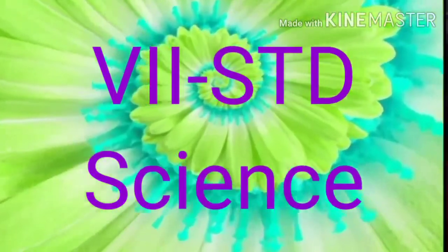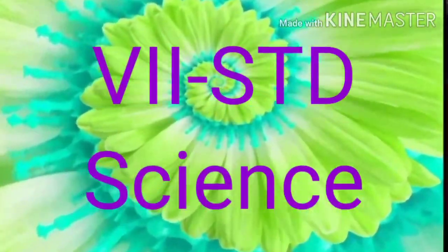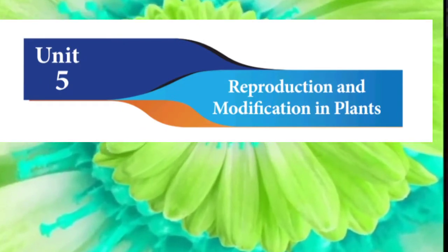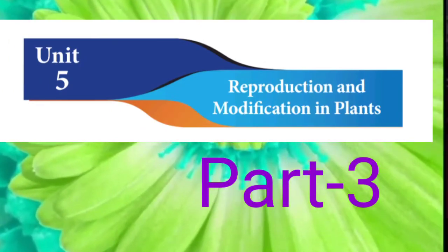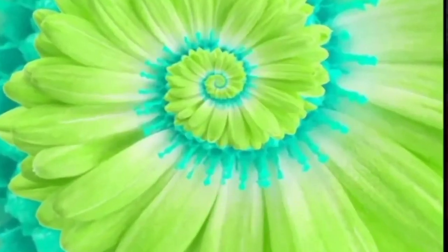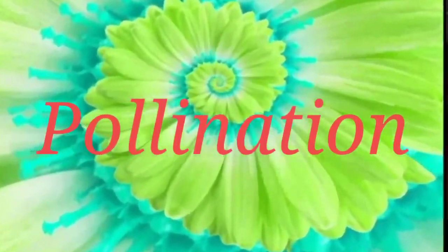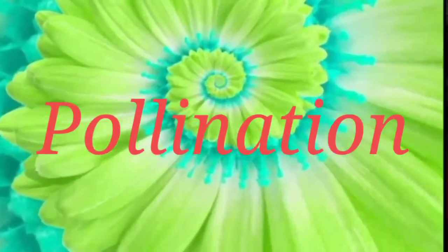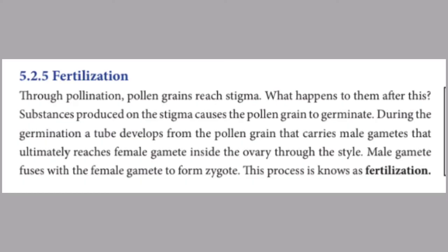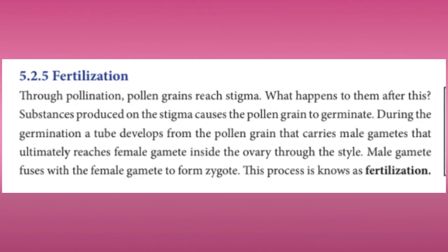Hello children, this is 7th standard science, unit 5: Reproduction and Modification in Plants, Part 3. In our previous class we learned about pollination. Now we will learn about fertilization.